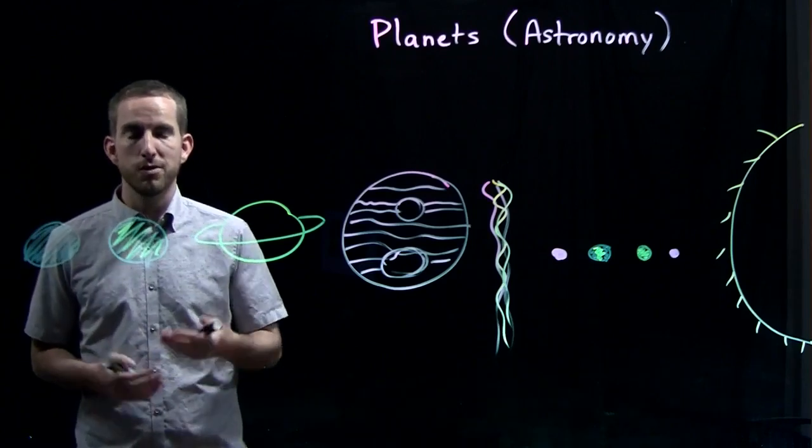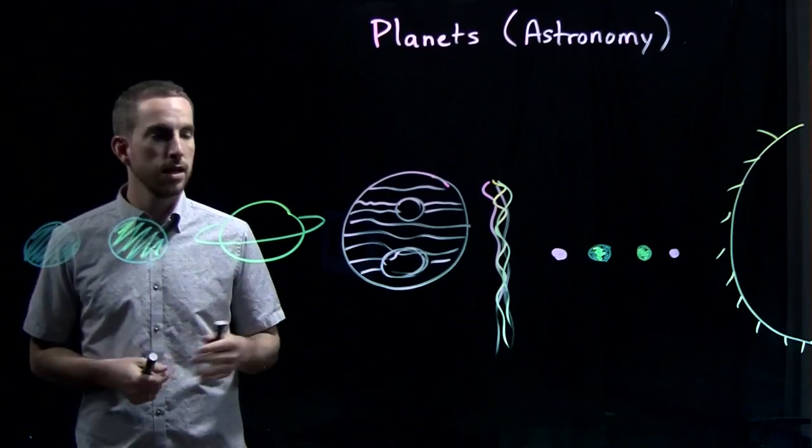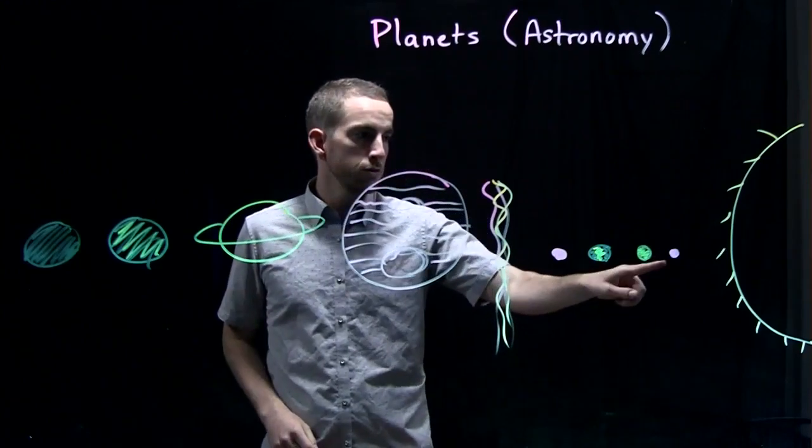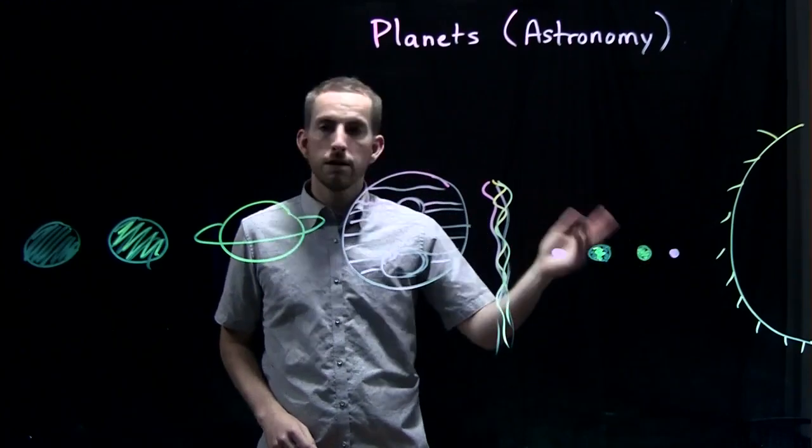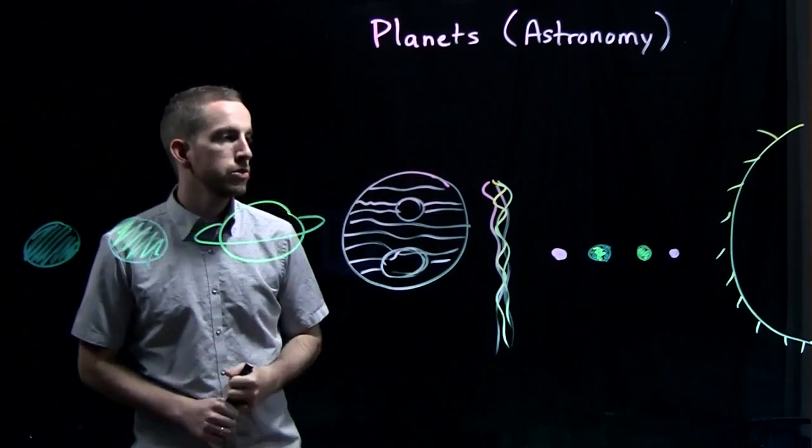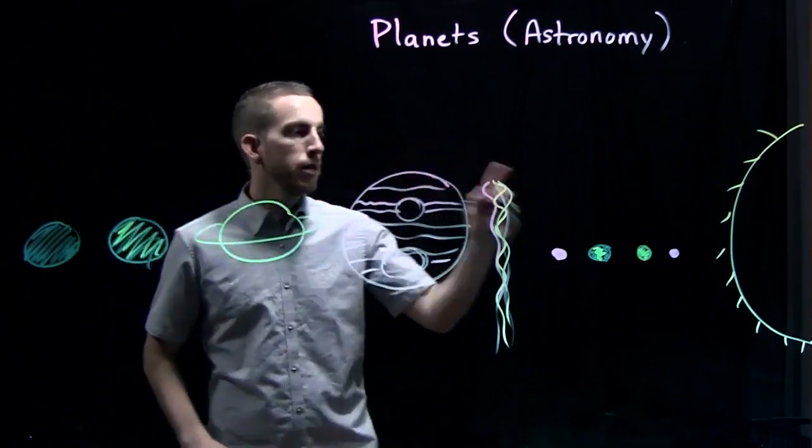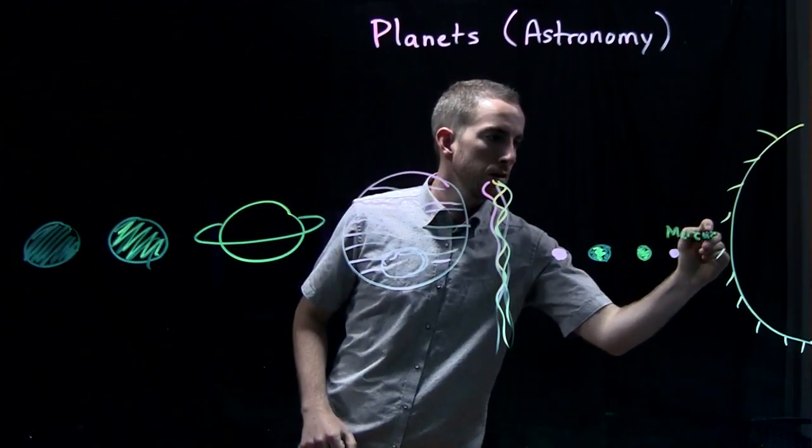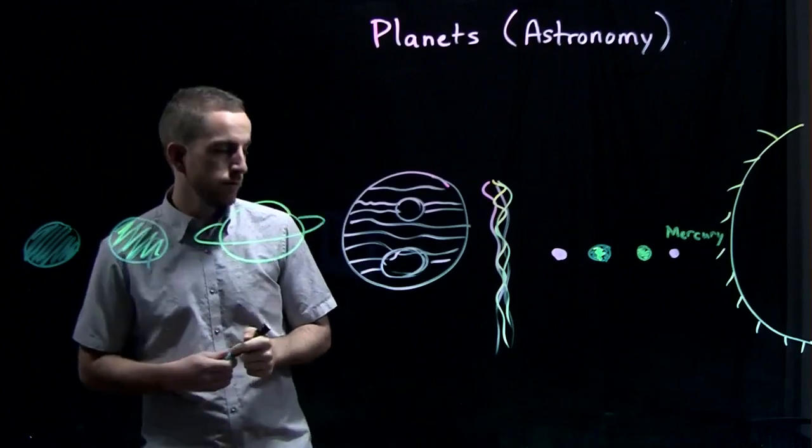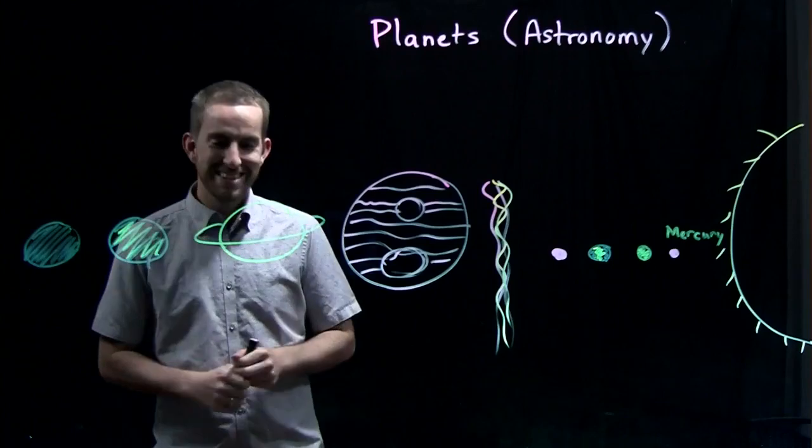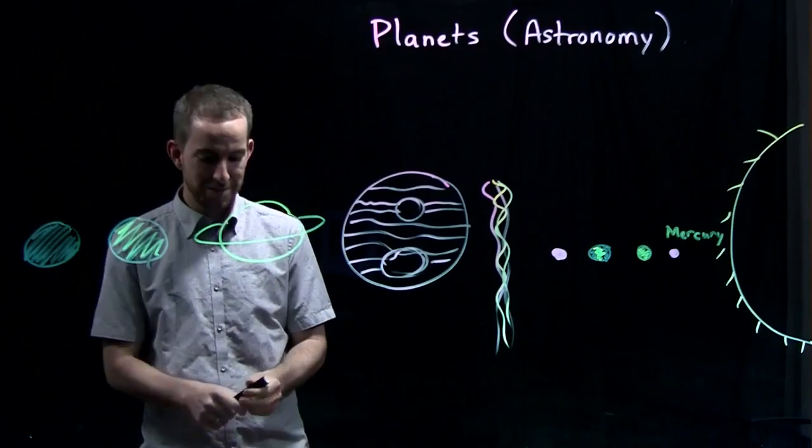So all of these planets have names that are based on Roman and Greek myths. And so the first one we have is 수성, and in English this is Mercury. Mercury was a god.